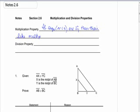I'll explain to you what I mean very shortly. If segments or angles are congruent, then their like multiples are congruent.